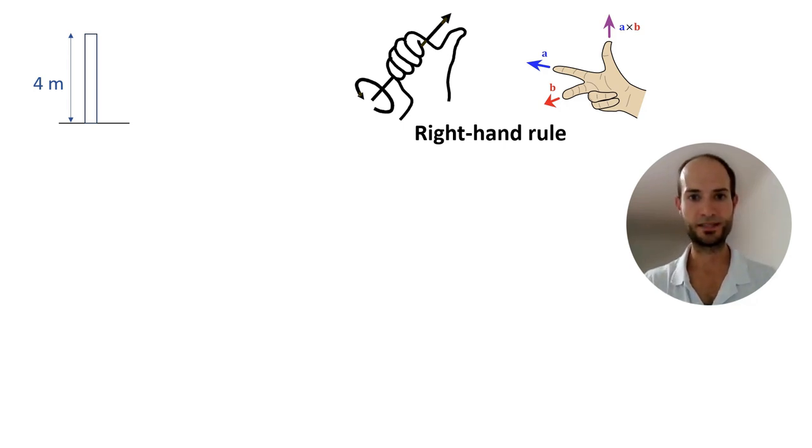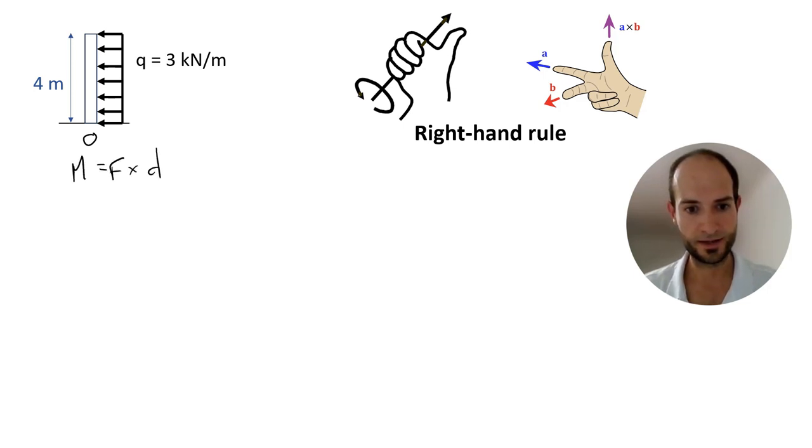Let's put another example. In this case, we have a 4-meter wall with a line load of 3 kN per meter. As always, moment equals force times distance. We are just going to calculate it here. Let's call it point O. Moment equals force times distance. Now, what is the force? Because now we have a line load, we don't have a point load. We have to multiply the line load times the length, or in this case the height, where it is applied. So, we have 3 kN per meter times 4 meters. That's going to be the total load.